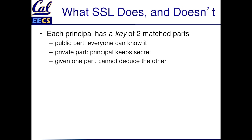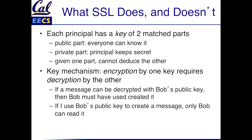How does this work? Each principal — you're a principal, the browser's a principal, the server's a principal — generates a key that contains two matched parts. There's a public part that everyone can know, and there's a private part which you keep secret. It doesn't matter which part's which, just pick one. The important property is that given one part, you can't deduce the other part. And the other key property is that if you use one part to encrypt something, you have to use the other part to decrypt it.